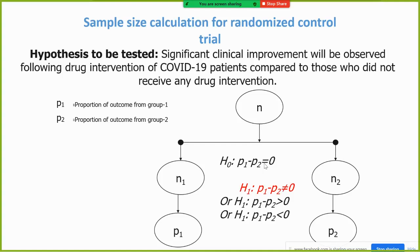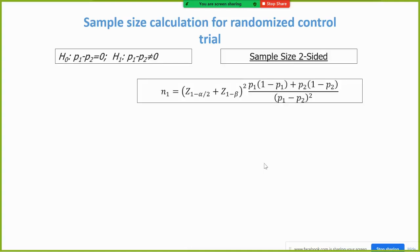Based on the hypothesis, group one proportion one is equal to proportion two, and other is proportion one is not equal to proportion two.